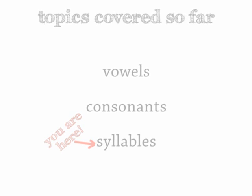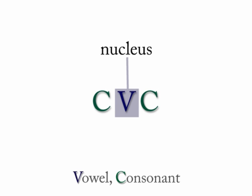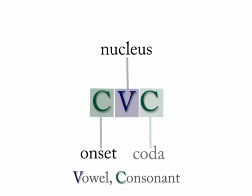Vowels sit at the heart of the syllable, which is actually called the nucleus of the syllable. Consonants are built around that nucleus. Consonants before the vowel — before the nucleus — are part of the syllable's onset. There may be one or more consonants in the onset. Consonants after the vowel are the coda, which is Italian for 'tail' of the syllable.